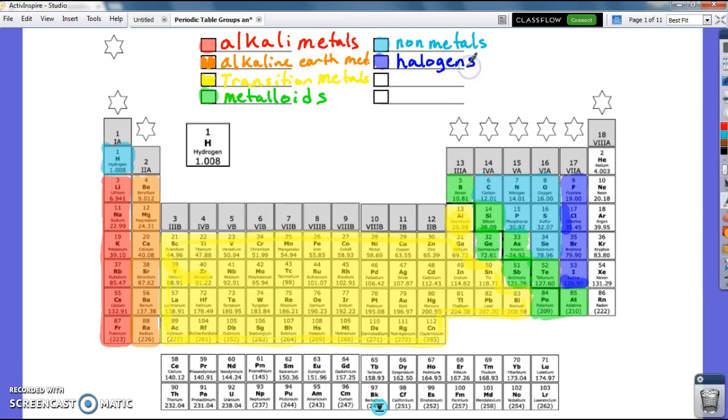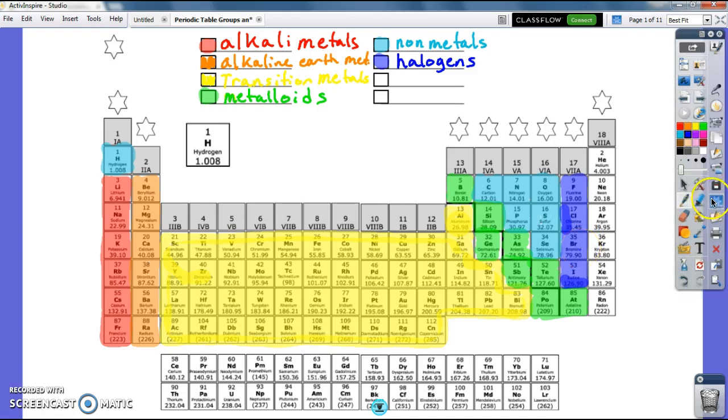You might have heard of halogen light bulbs. Halogen light bulbs are made of the same sort of things. They've got these halogen gases inside of their little bulbs.